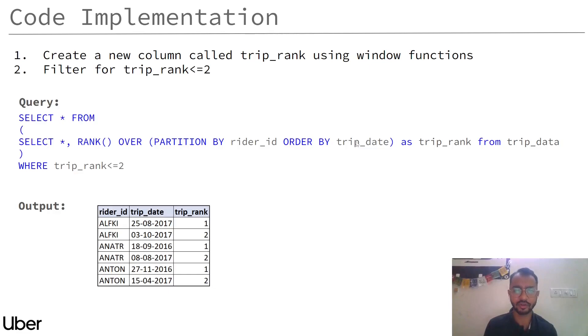Here are the first two steps where we have created a rank column partitioned by rider_id, as for every rider_id the rank will reset, and then we've ordered it by trip_date so we get the ranks in ascending order. We've called this column trip_rank and then we've used a subquery and filtered for wherever trip_rank is less than or equal to 2 so that we get only the first two trips of every user. Here you can see our output looks like this.